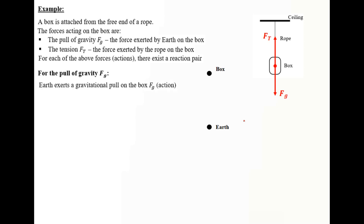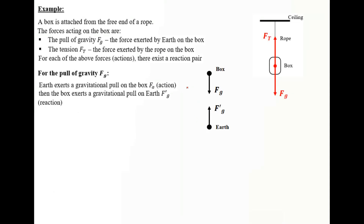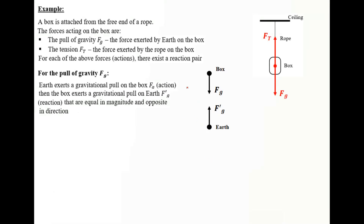For the pull of gravity, Earth exerts a gravitational pull on the box, F_g, as the action. According to Newton's Third Law, the box exerts a gravitational pull on Earth, F'_g, as the reaction. These two forces are equal in magnitude, opposite in direction, of the same type, and act at the same time on different bodies.